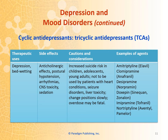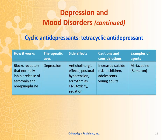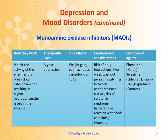Cyclic antidepressants, also known as tricyclic antidepressants or TCAs, have a therapeutic use for depression and bedwetting. They produce anticholinergic effects and postural hypotension, arrhythmias, CNS toxicity, and sedation. The tetracyclic antidepressant blocks receptors that normally inhibit release of serotonin and norepinephrine. Monoamine oxidase inhibitors, or MAOIs, are a very old class of antidepressant drugs not used nearly as much anymore. They inhibit the activity of enzymes that break down catecholamines, resulting in higher neurotransmitter levels in the synapse, and are generally prescribed to treat atypical depression.